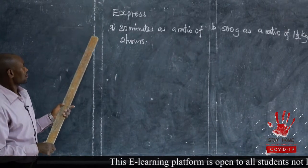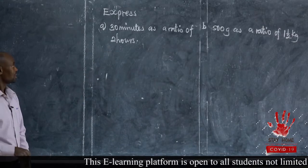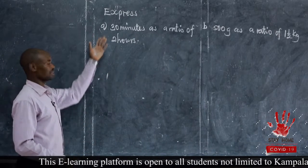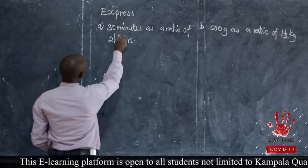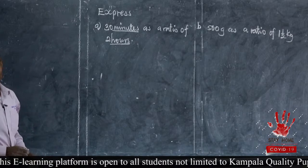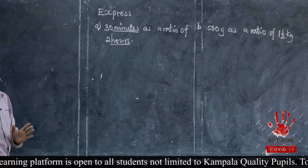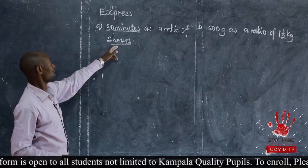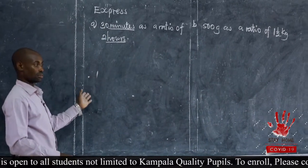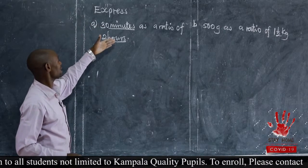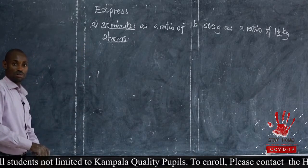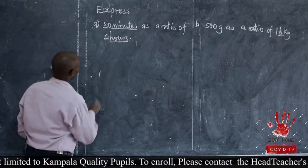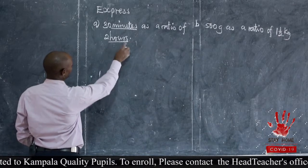We are going to express 30 minutes as a ratio of two hours. When you look at this, we have different units — minutes and hours. So what do we do? You must convert one of them so that you have similar units. Which one is simpler to convert — from minutes to hours, or from hours to minutes? I took you through all the methods, but as a good student of mathematics, it is faster to convert two hours to minutes.